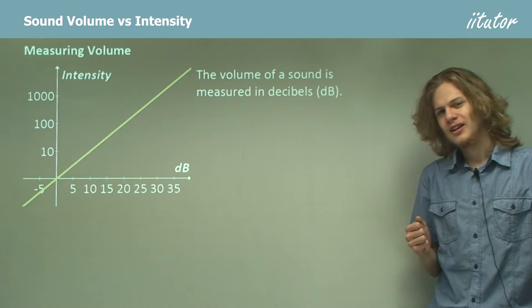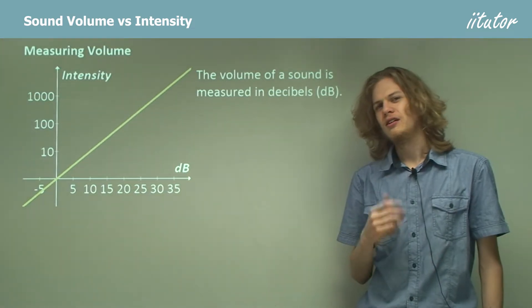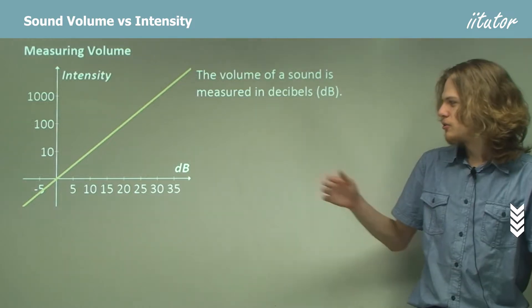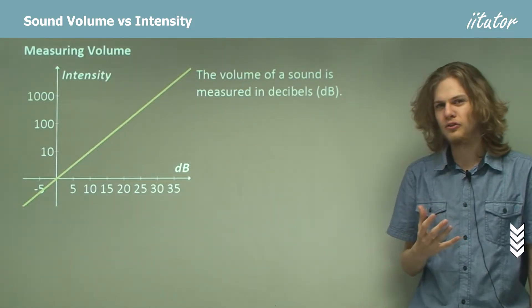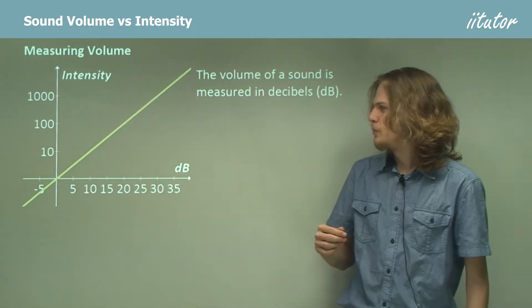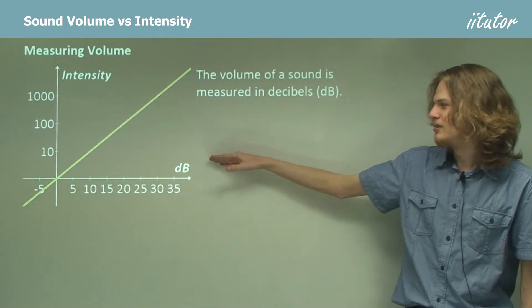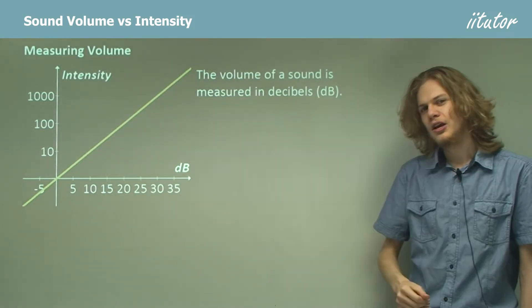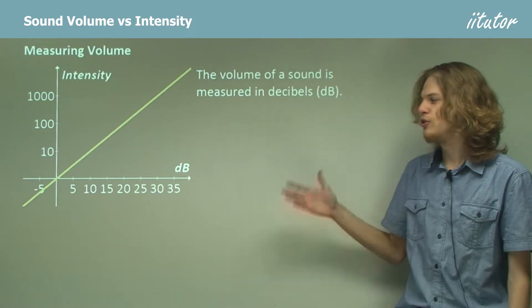Now, how do we measure volume? It turns out that we use a scale called decibels, which will be a little bit unusual at first. We have a graph here of how the intensity of the sound changes with decibels. On the x-axis, it's fair enough, 5, 10, 15, 20, and so on. But hang on, look at the y-axis. We're going to 10, to 100, to 1000. We're not going up by a certain number each time, we're going up by a certain factor.